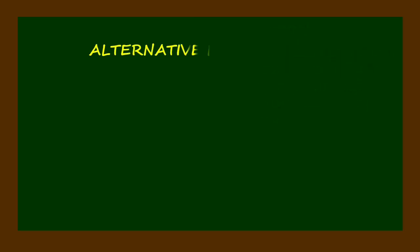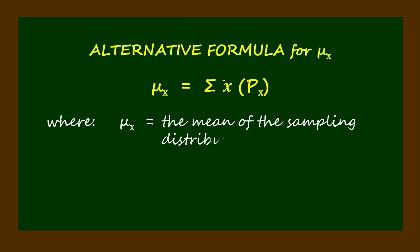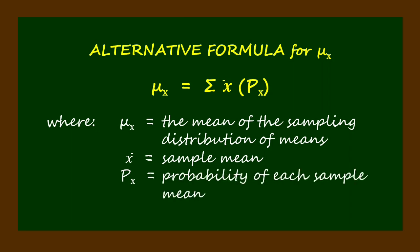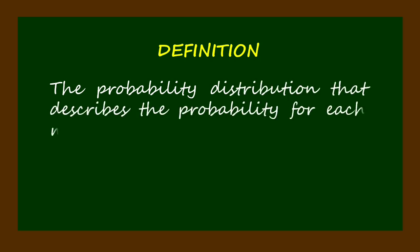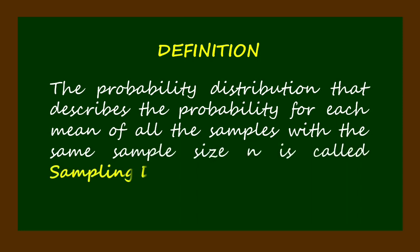Here is an alternative formula: mu sub x is equal to the summation of the product of bar x and p sub x, where mu sub x is the mean of the sampling distribution of means, bar x is the sample mean, and p sub x is the probability of each sample mean. The probability distribution that describes the probability for each mean of all the samples with the same sample size n is called sampling distribution.